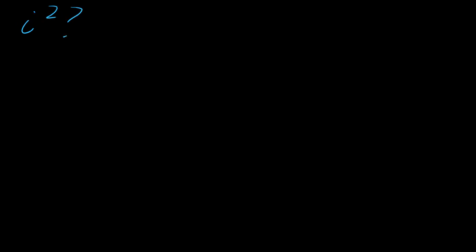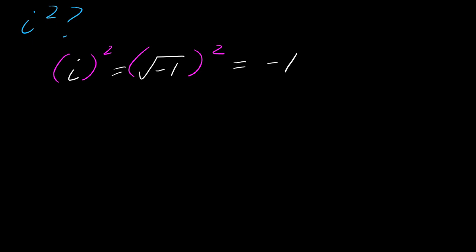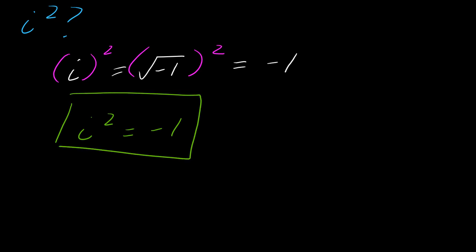I've talked about this in another video, but I want to review this fact one more time. What is i squared? Remember, i is just the square root of negative 1. If I were to square this, the square root symbol will actually just drop, so this will equal negative 1. This is a really key fact: i squared equals negative 1. That is a big deal when you're working with imaginary numbers because it's a fact that we use a lot.